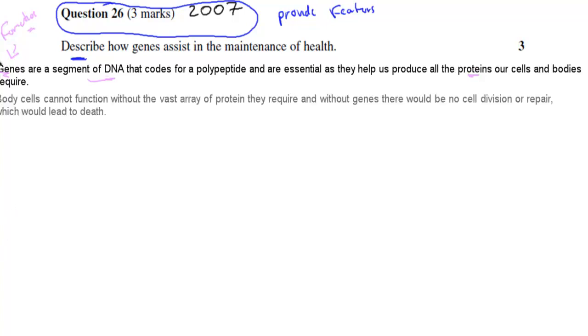For example, the second statement I wrote: body cells cannot function without the vast array of proteins they require, and without genes there would be no cell division or repair which would lead to death. So our cells need proteins.